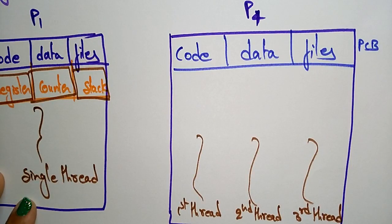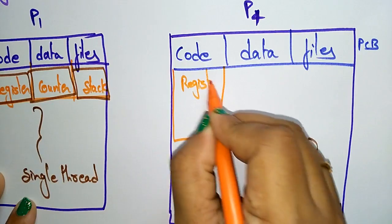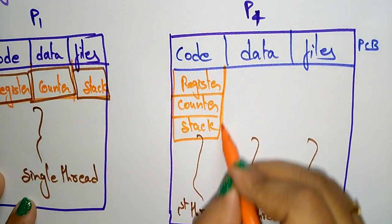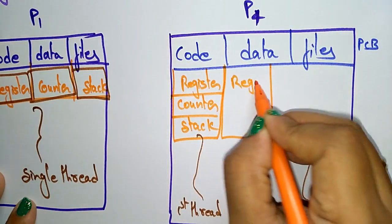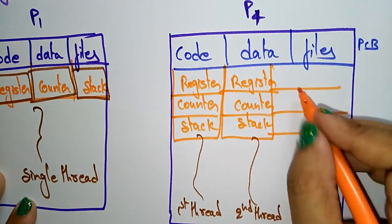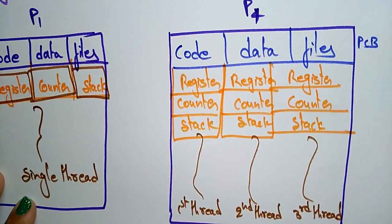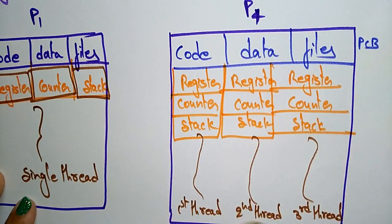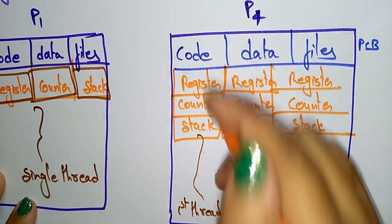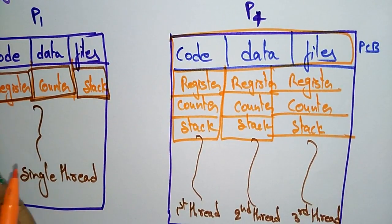Each thread has its own register, program counter, and stack. So as the number of threads increases, each thread has its own register, its own program counter, and its own stack. But all these threads share only the code, data, and files from the process control block. This is the multi-thread process, compared to the single-thread process we saw earlier.